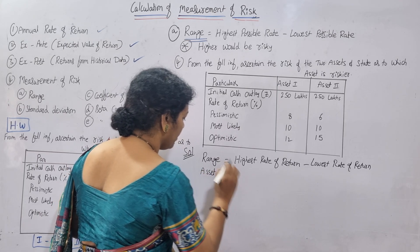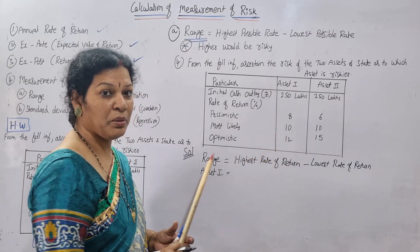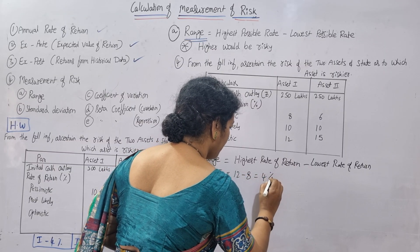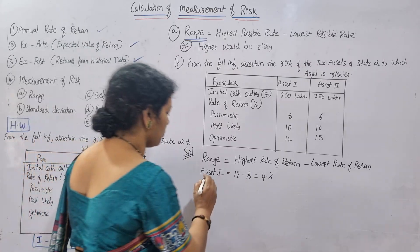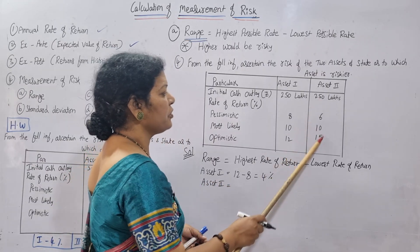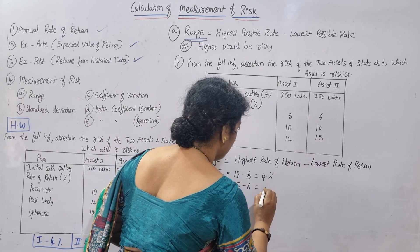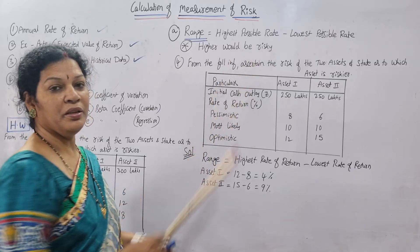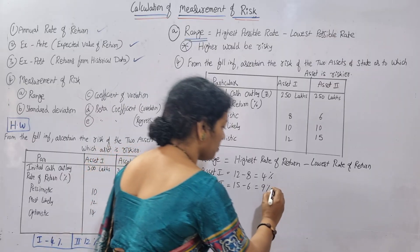Asset 1: the highest value is 12 and the lowest value is 8, so 12 minus 8 equals 4%. The range of Asset 1 is 4%. For Asset 2: the highest value is 15 and the lowest is 6, so 15 minus 6 equals 9%. The range of Asset 2 is 9%. Since higher range means more risk, Asset 2 is more risky.